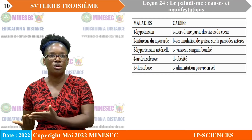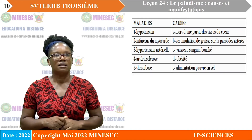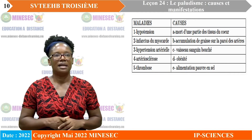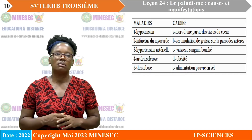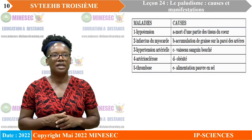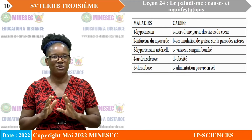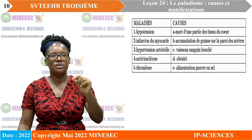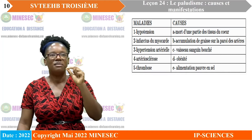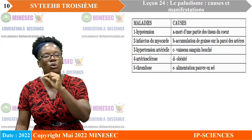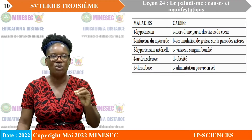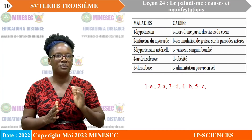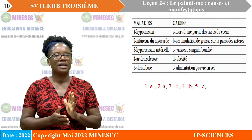L'hypertension artérielle est due à l'accumulation de graisse dans la paroi des artères. L'athérosclérose, c'est lorsque les vaisseaux sanguins sont bouchés par accumulation de graisse dans la paroi des artères. L'hypertension artérielle peut être causée par l'obésité. La thrombose, c'est lorsqu'il y a un vaisseau sanguin qui est bouché. Donc, on a : 1-E, 2-A, 3-D, 4-B et 5-C.